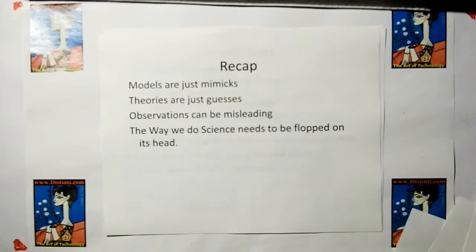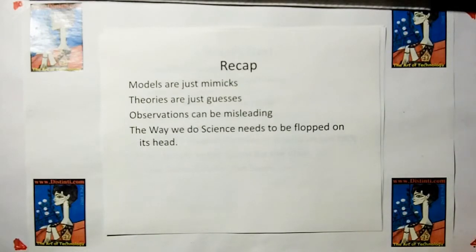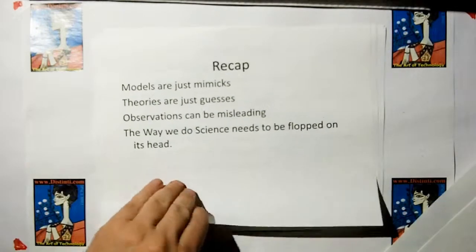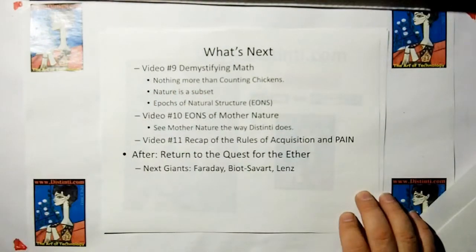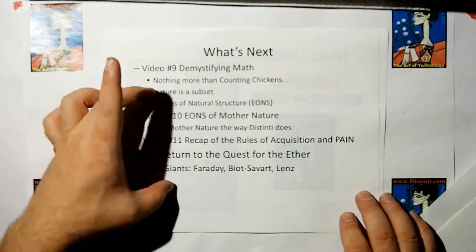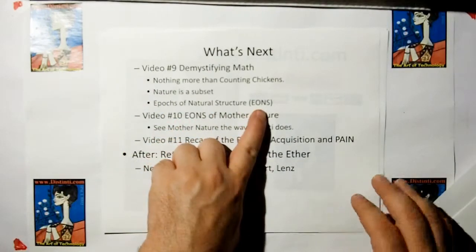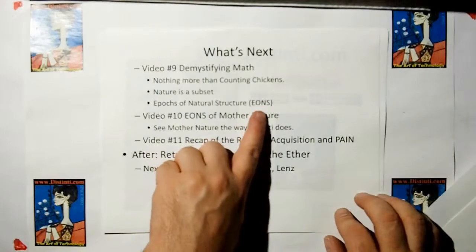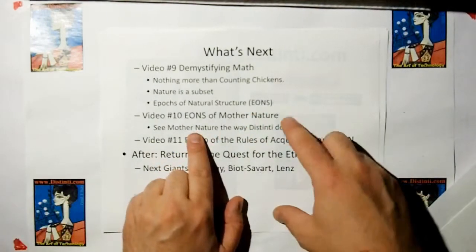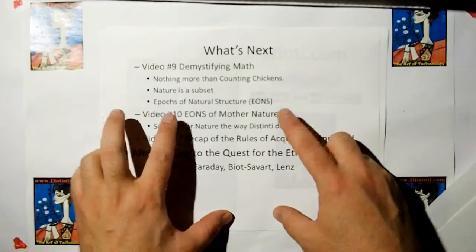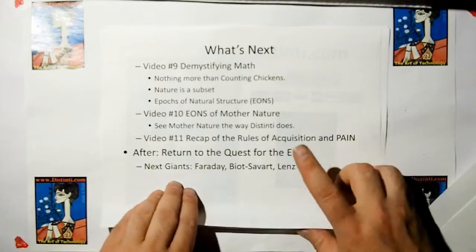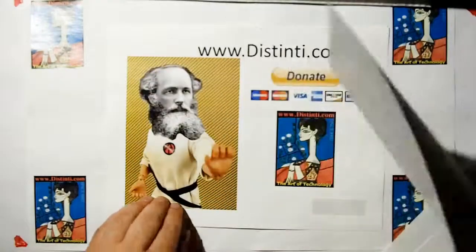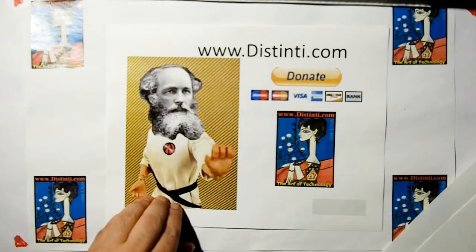Remember, models are just mimics, theories are just guesses, and observations can be misleading. We have to turn basically everything around. What's next? Video 9, we're going to demystify math. We're going to show math is nothing more than counting chickens, and nature is a complete subset. Then we're going to talk about the epochs of natural structure and use that to look at Mother Nature in general. Then we're going to recap the rules of acquisition and go on to our quest for the ether. If you can donate, I'd really appreciate it. Thank you.